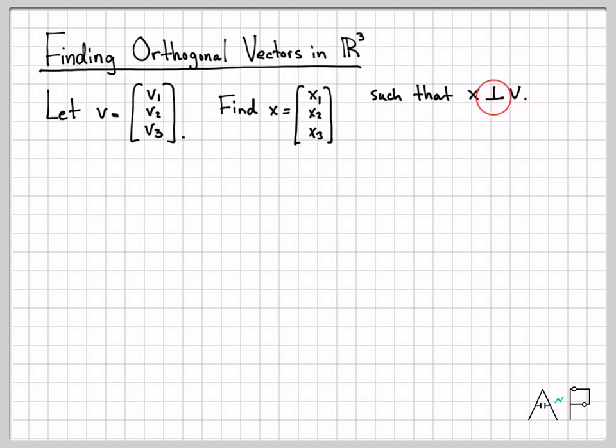If you haven't seen this notation, that perpendicular symbol just means that x is orthogonal to v. What do we know about orthogonal vectors? Orthogonal vectors have a dot product of zero. So v dot x equals zero is my criteria. If I multiply that out, that means x1·v1 plus x2·v2 plus x3·v3 has to equal zero.